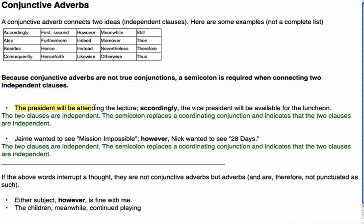Here you have: 'The president will be attending the lecture.' And because your next idea is quite close, you don't necessarily want this as a compound sentence or a new sentence — you want it connected. So you use a conjunctive adverb with a semicolon in front and a comma afterwards: 'The vice president will be available for the luncheon.'